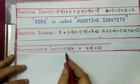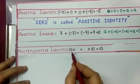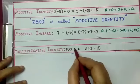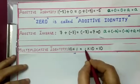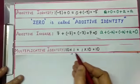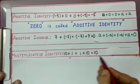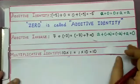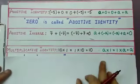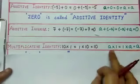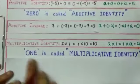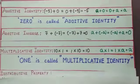Now, the multiplicative identity: with what number do we multiply 10 to get 10 itself? It is 1. So 10 into 1 equals 1 into 10 equals 10. If any integer is multiplied by 1, or 1 is multiplied by any integer, we get the integer itself. In general, for any integer a, a into 1 equals 1 into a equals a. Here 1 is called the multiplicative identity.